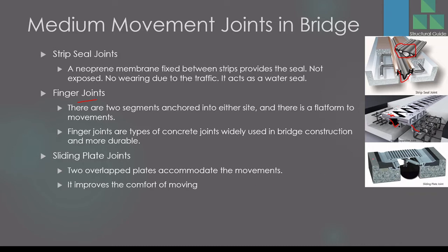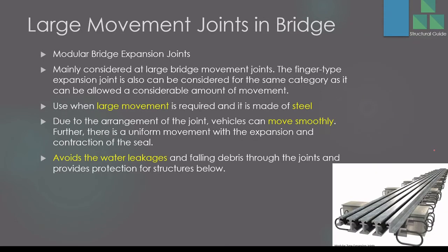The third medium-movement type is the sliding plate joint. There are two plates on top, and the top plate moves to accommodate lateral movement. Because the plates are properly fitted, vehicle movement over them is smooth — there may be a slight sensation but no large bump or hump. These joints are mostly made of steel. Durability issues may arise, so proper maintenance is required.